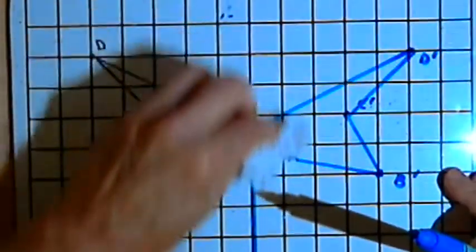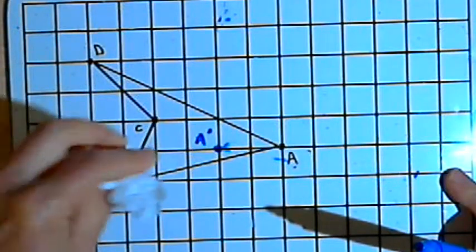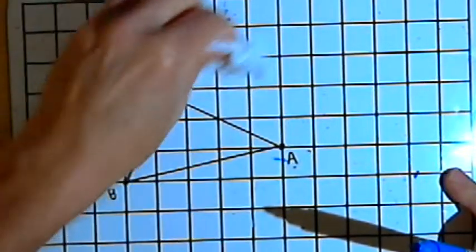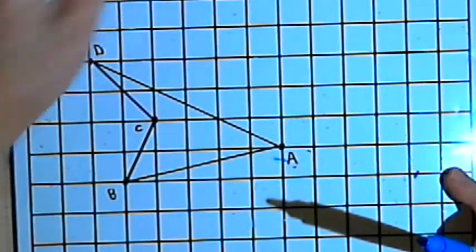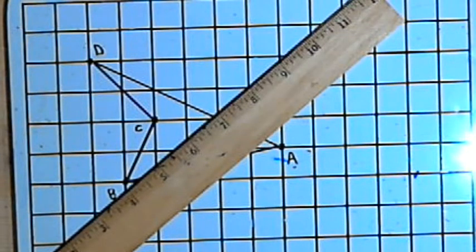Now, when you're working with reflections across a horizontal or vertical line, that's fairly easy. What's a little bit harder is doing a reflection across a diagonal line, a 45-degree diagonal.